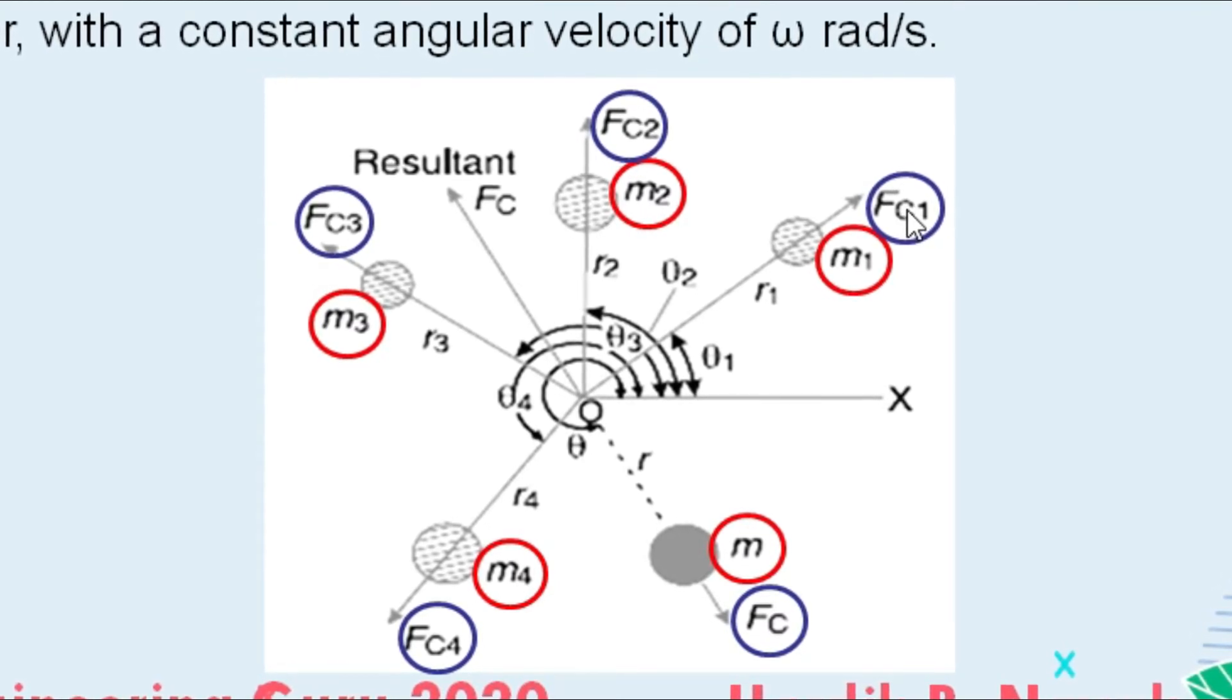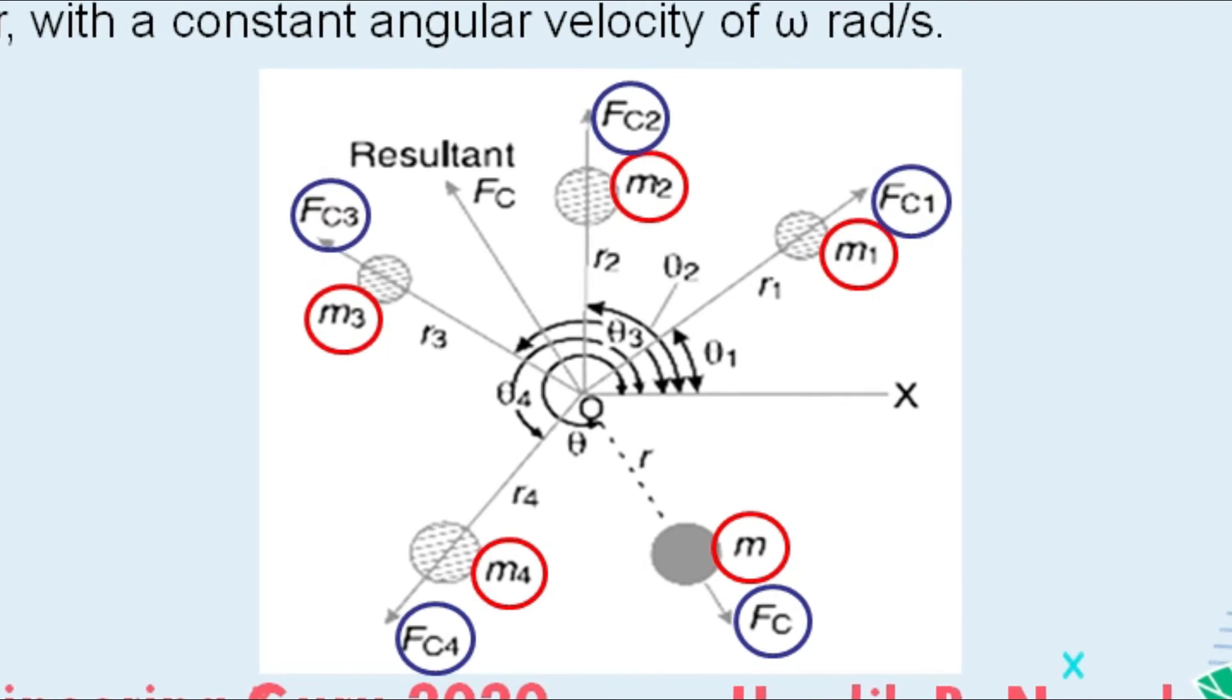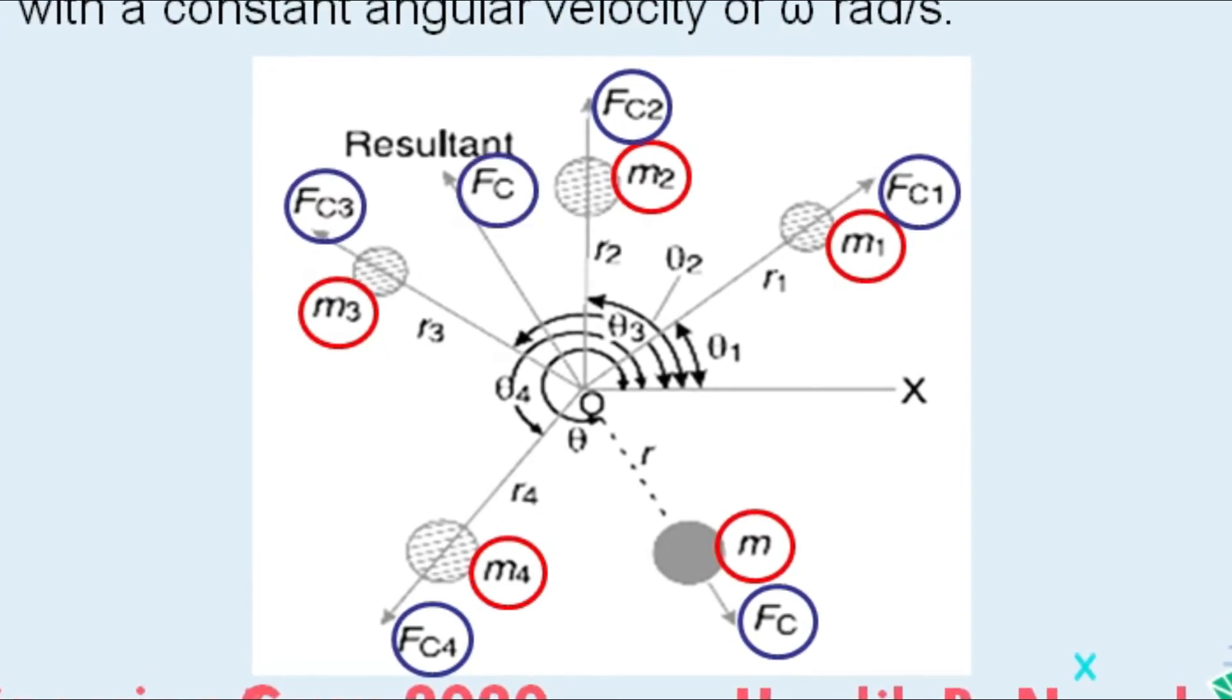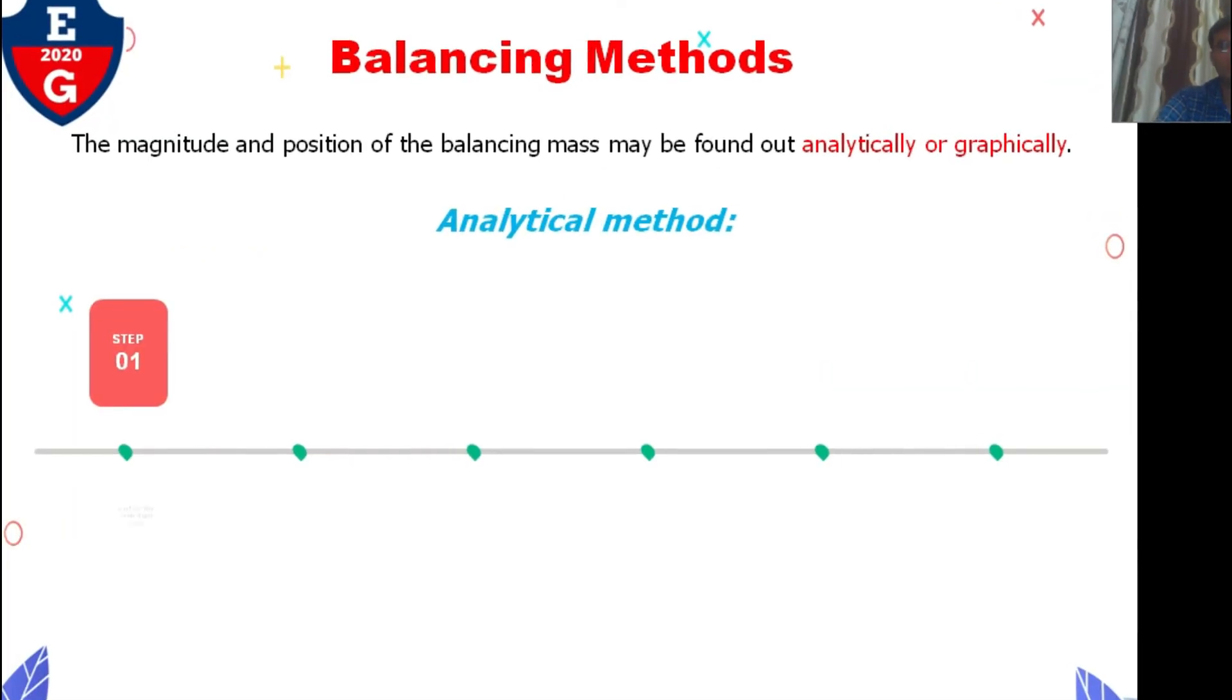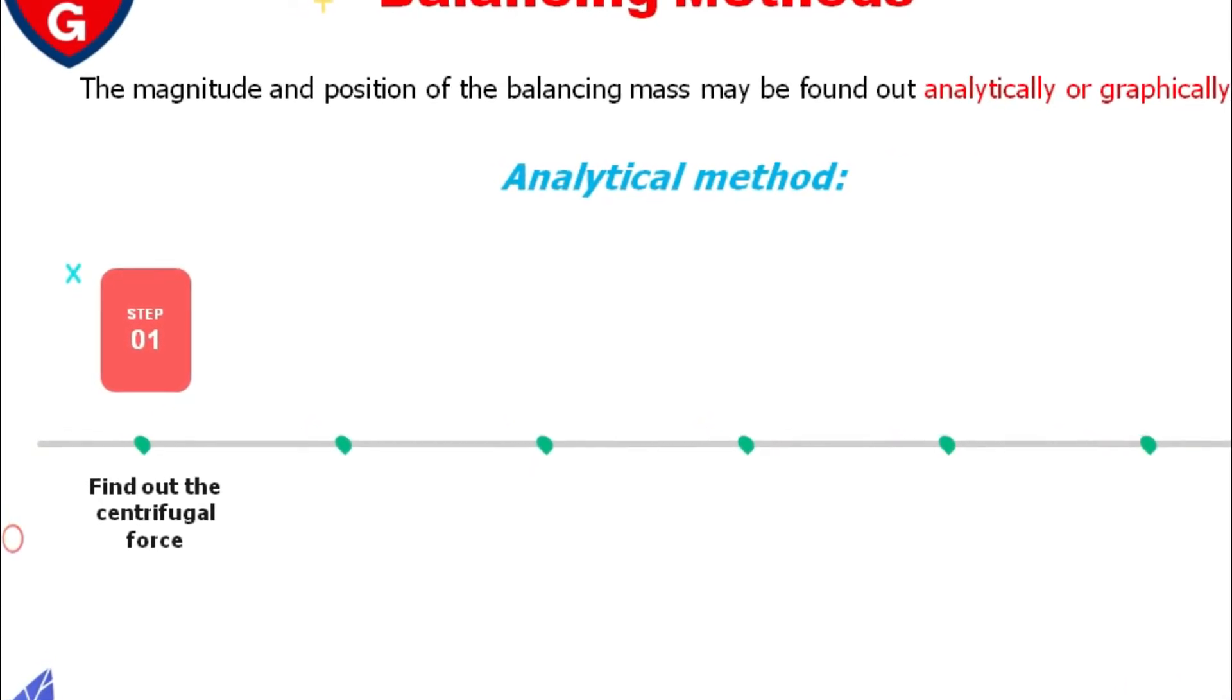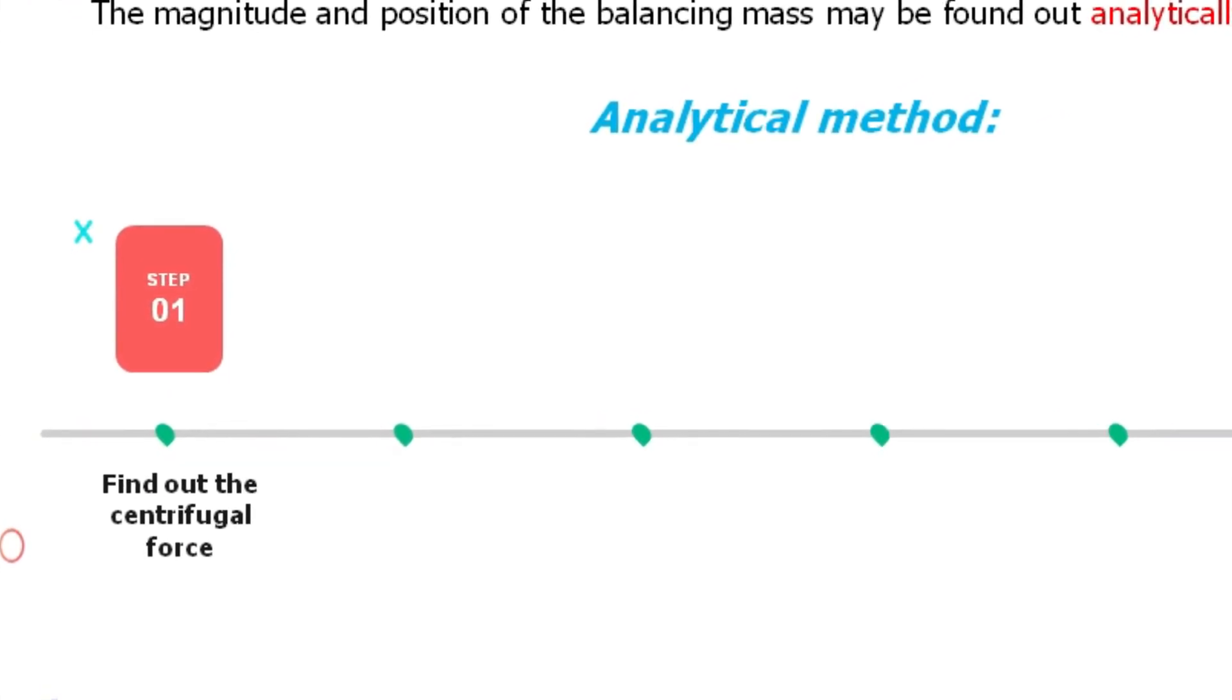Now we will see the analytical method for how to find this balanced mass. The magnitude and position of the balancing mass may be found analytically or graphically. Both methods in numerical form we already covered, so you can see my previous video. In this video, we are going to focus on the analytical method steps.